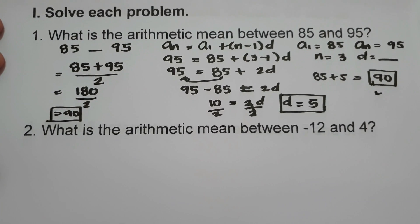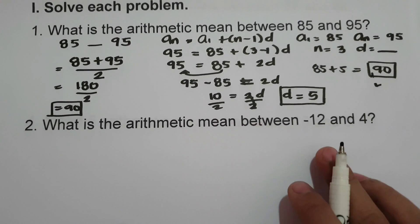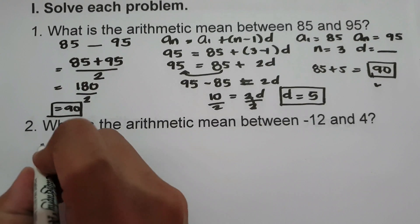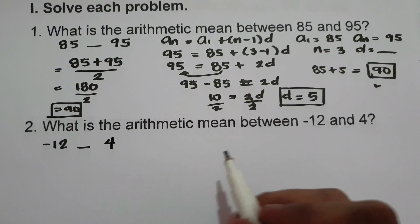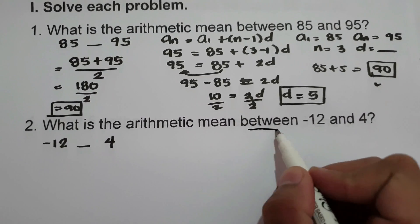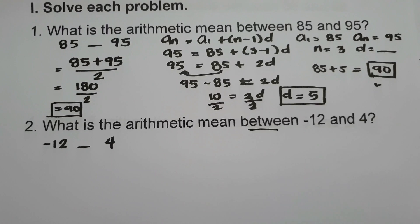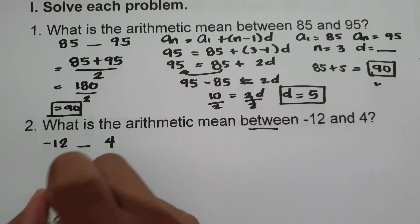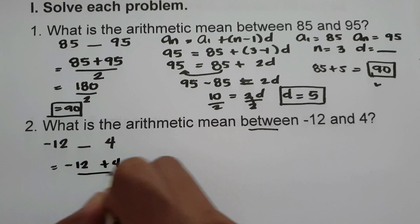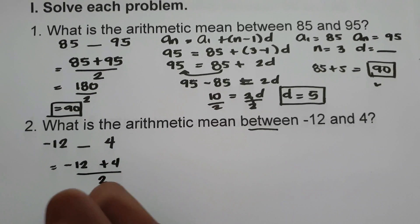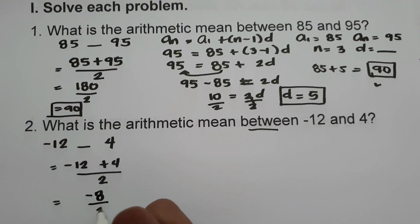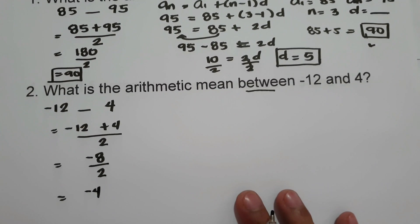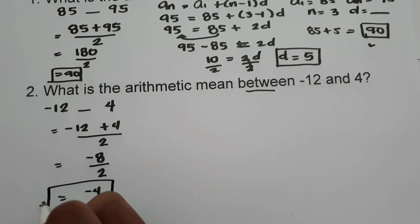What about number 2? What is the arithmetic mean between negative 12 and 4? We have negative 12, blank, and 4. We are looking for a number between negative 12 and 4. Adding: negative 12 plus 4 is negative 8, divided by 2 is negative 4. So the arithmetic mean is negative 4.